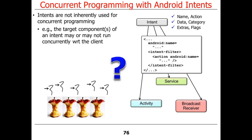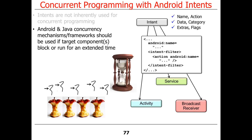It turns out that intents are not inherently related to concurrency. Target components — other activities, services, broadcast receivers — may or may not run concurrently with respect to the client that starts them up. However, if the component being started is going to block or run for an extended period of time, you need to make sure things run concurrently. As we'll see, 'a while' is defined as basically more than three to five seconds, at which point you need to do concurrent things.